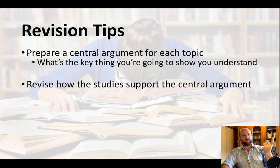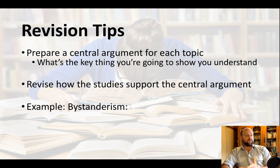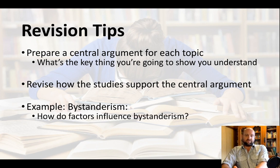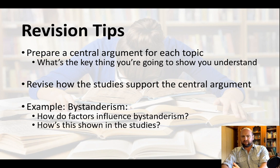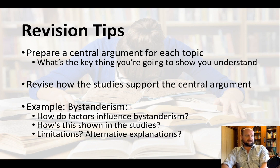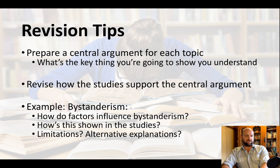A lot of students never link the results and explain them back to how they support the argument — and that is really key. Those two to three sentences make a big difference. For example, in bystanderism from Human Relationships in Paper 2, my central argument might explain how diffusion of responsibility could lead to bystanderism. Then I look at how this is shown in studies — correlational studies like Levine's and the Smokey Room study. For an essay, I also need critical thinking: limitations of my explanations, limitations of the studies, and alternative explanations.